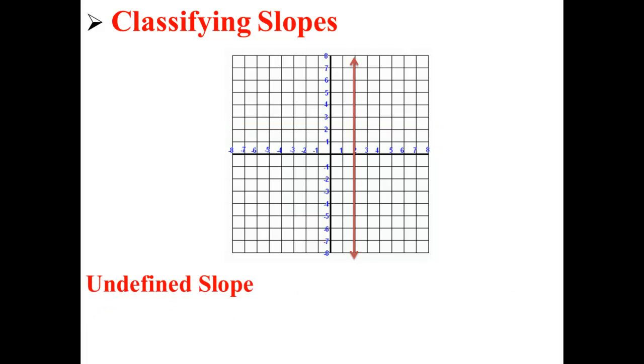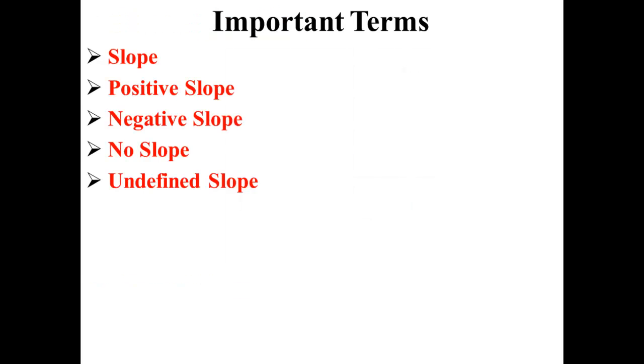Here, we have a vertical line. You might think that it has no slope, but actually, its slope is undefined.